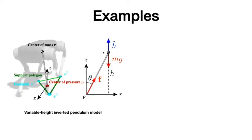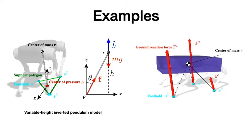In the paper, we briefly describe two nonlinear systems, namely the variable height inverted pendulum model and the single rigid body model, and we show how they can be integrated into our framework.